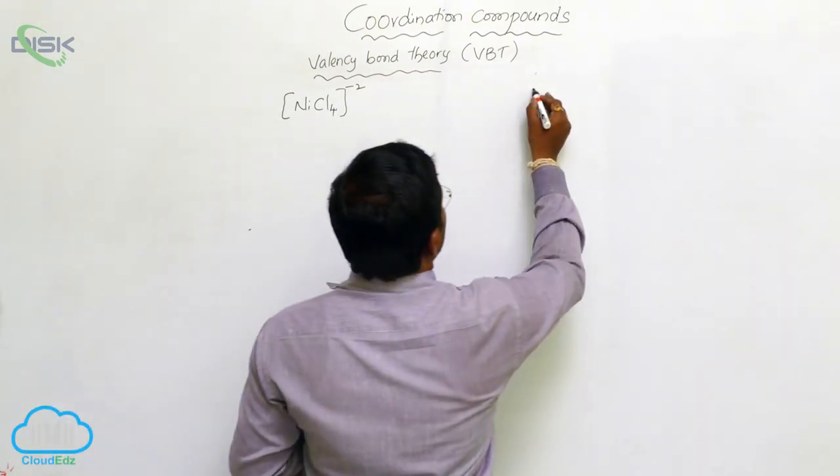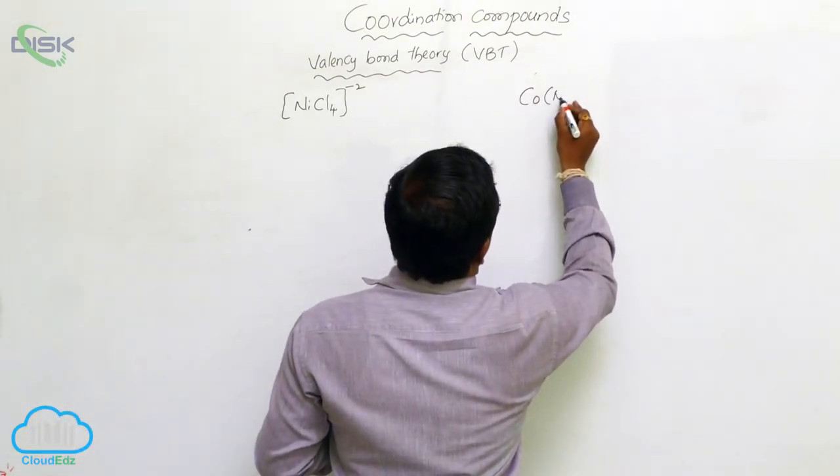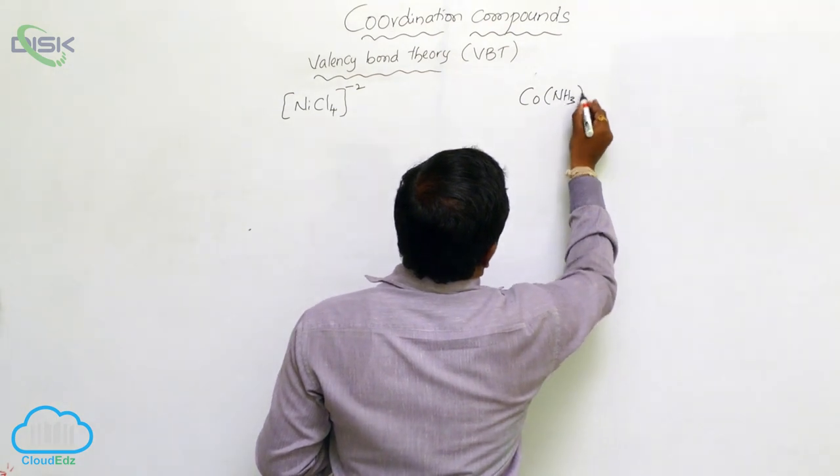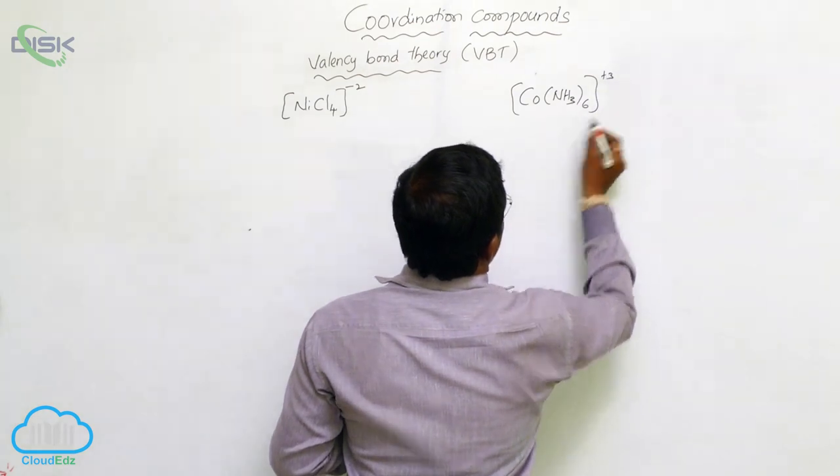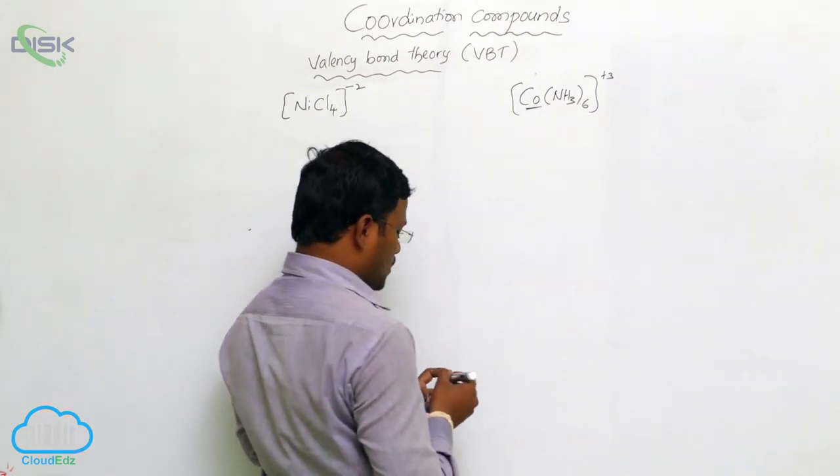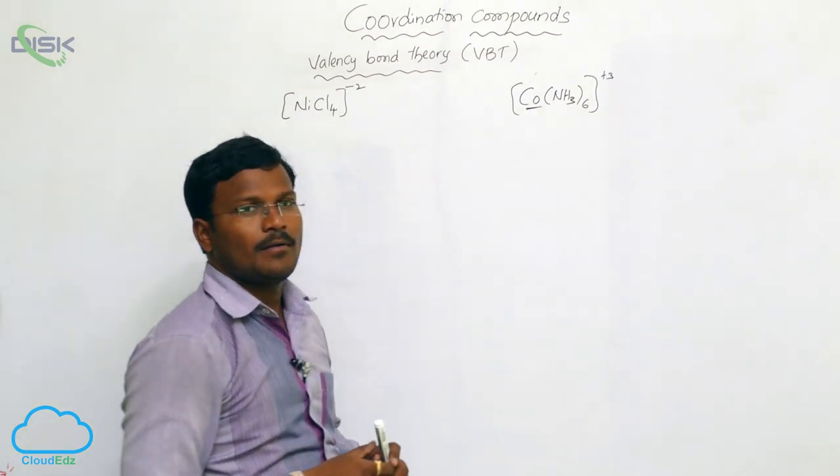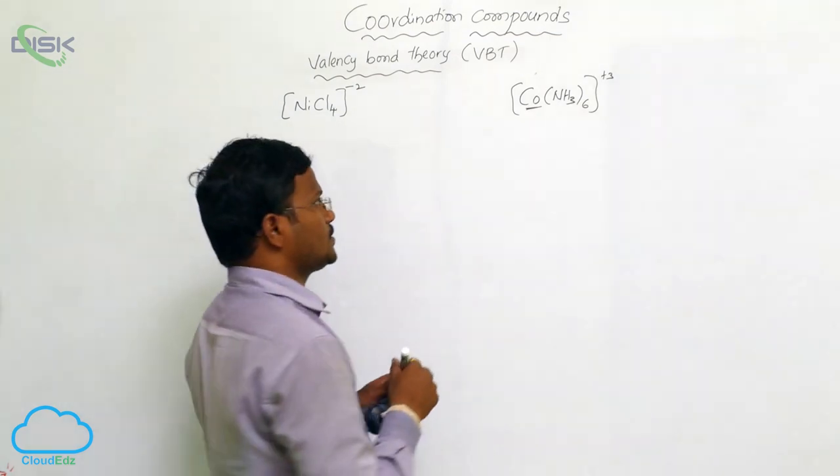Example for this is Co(NH3)6 3 plus, where in the resulting cobalt, all the orbitals are with paired electrons. Whereas, in the second explained example of CoF6, CoF6 minus 3, in this compound.